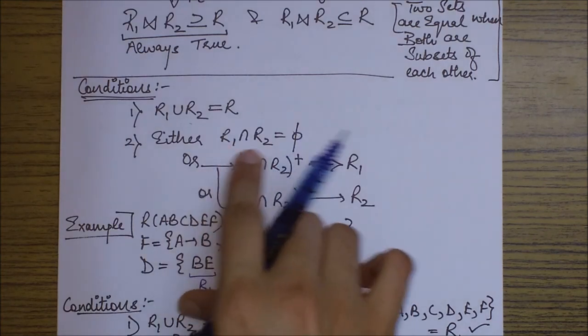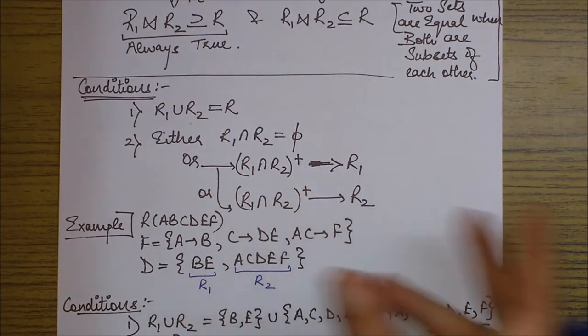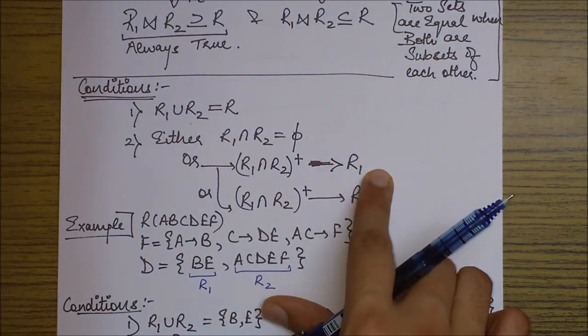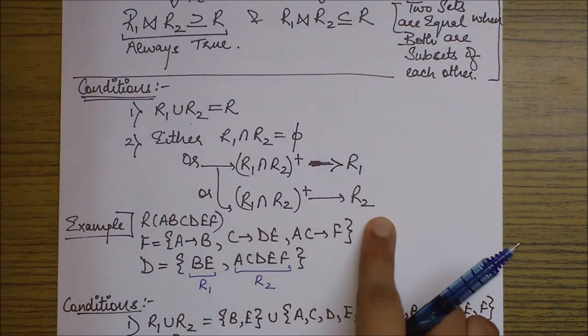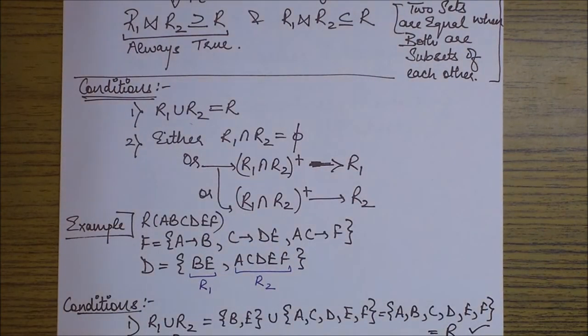So either the intersection should be phi, or the intersection if not phi will be some attribute. So that attribute's closure should either determine R1 or it should determine R2. Now let's see this entire thing with the help of an example to get a better picture of this concept.